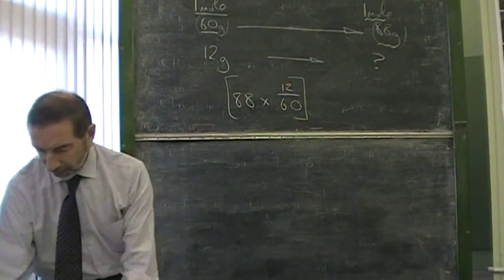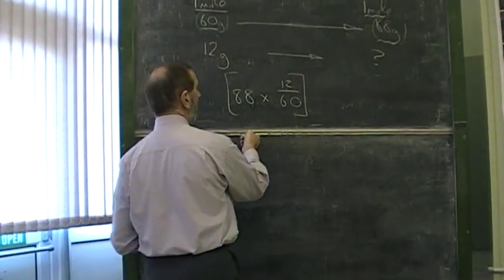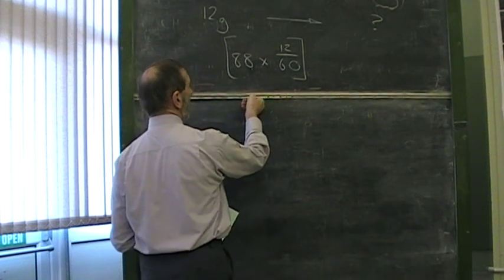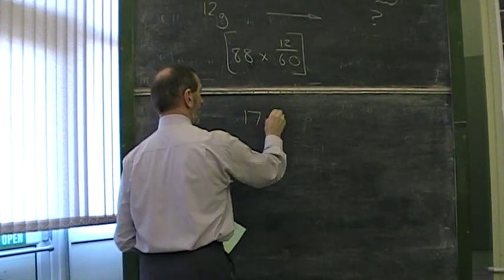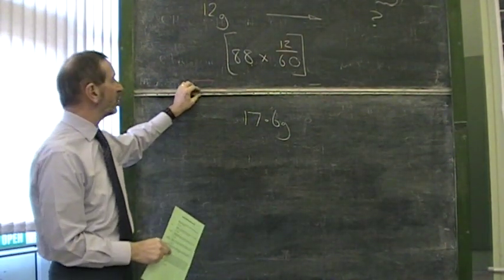If we do this calculation, it comes out at 17.6 grams. 17.6 grams is how much ester we should be getting.